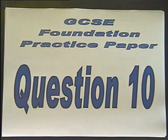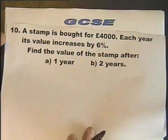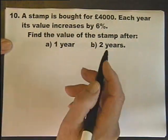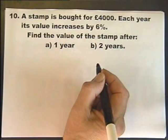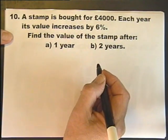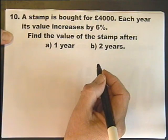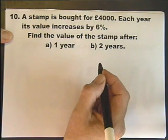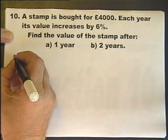GCSE Foundation Practice Paper 1B from MassTutor.biz and MassDVDs.co.uk. Question number 10. A stamp is bought for £4,000 and each year its value increases by 6%. Find the value of the stamp after one year and then after two years, so let's do part A.